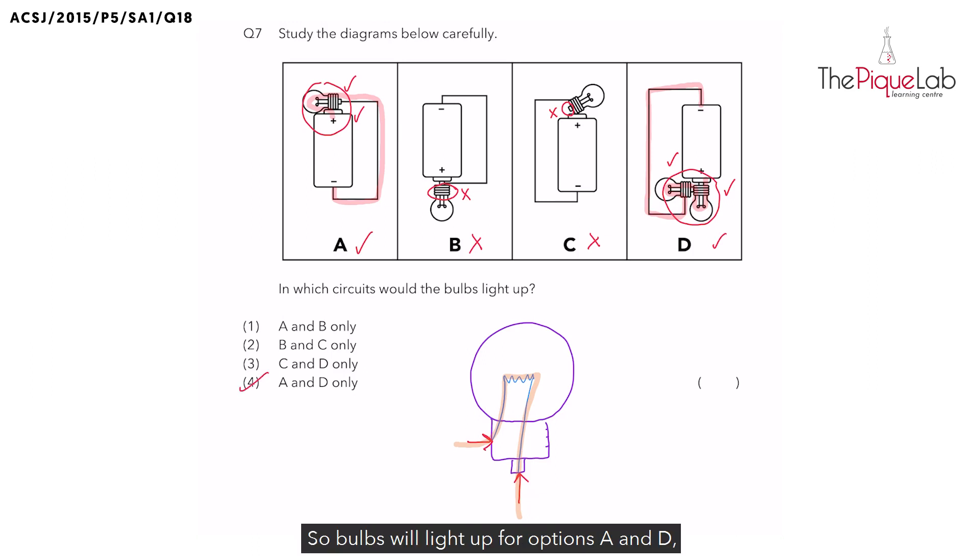So bulbs will light up for options A and D, giving us the answer as number 4.